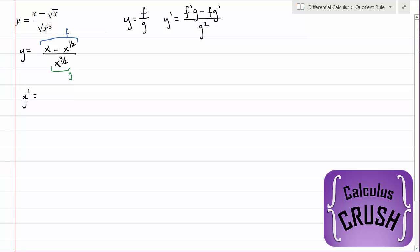So y prime equals the derivative of the top. So the derivative of x is 1. The derivative of x to the power of 1 half is 1 half x to the minus 1 half. So that's the derivative of the top, or f prime. Now we multiply it by the bottom, x to the 3 halves. And we subtract the top, x minus x to the half, times the derivative of the bottom, which is 3 halves x to the 1 half.